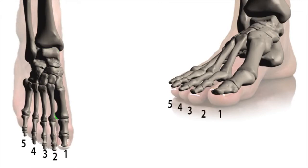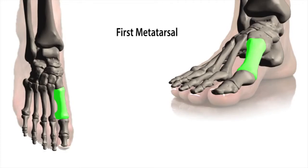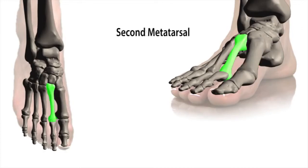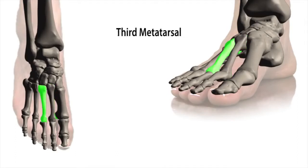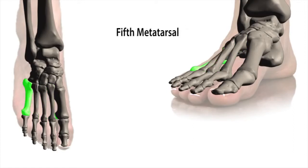The five metatarsal bones are numbered medially or from the inside of the foot outwards: the first metatarsal of the great toe or big toe, the second metatarsal which is the largest bone of the metatarsals, the third metatarsal, the fourth metatarsal and finally the fifth metatarsal.